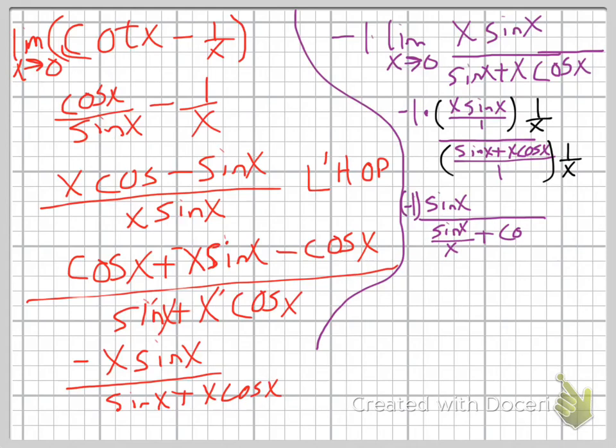Notice on the numerator that the x and the x will cancel out, and you're just left with negative 1 times the sine of x on the top. Now we can apply the limit, but on the denominator you'll notice that we have sine of x over x plus—the x's cancel out on the second term in the denominator—and so you get cosine of x.